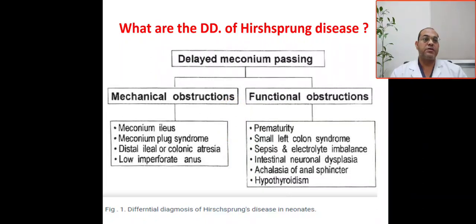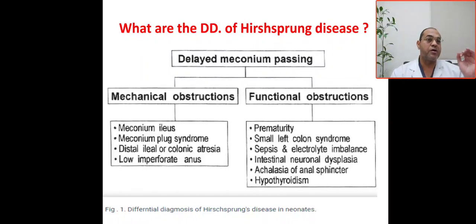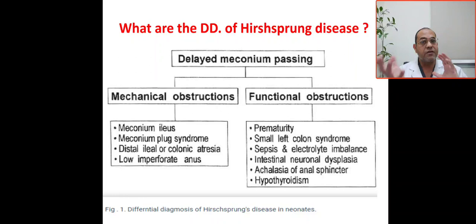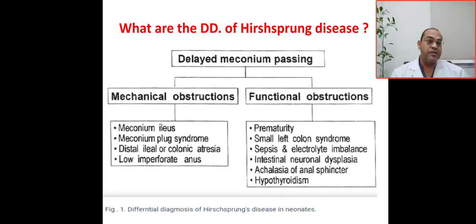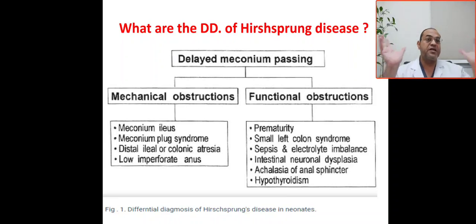Bismillah ar-rahman ar-rahim. This question comes from Dr. Shayma: what are the differential diagnoses of Hirschsprung's disease in the neonate, or what are the causes of delayed meconium passing in the neonate? We have two major categories: the first category is mechanical obstruction, and the second category is functional obstruction.